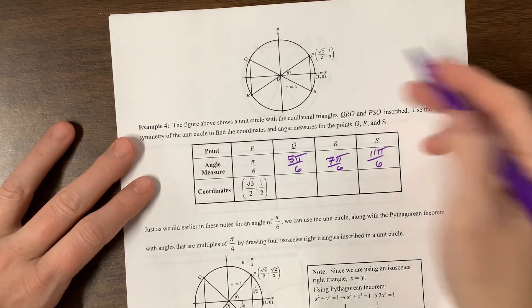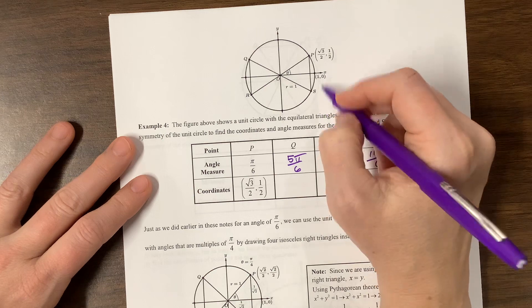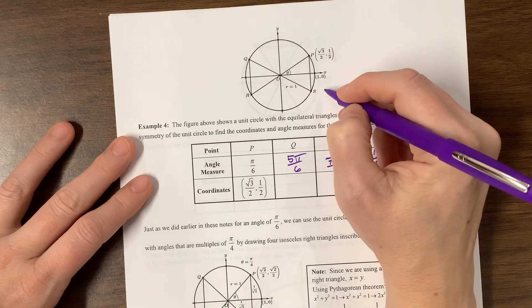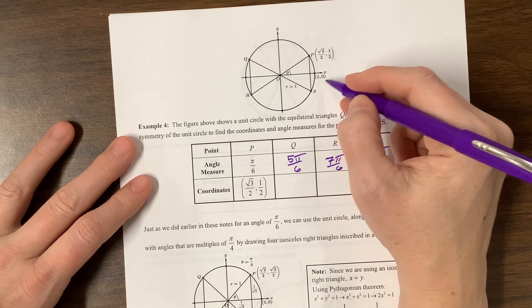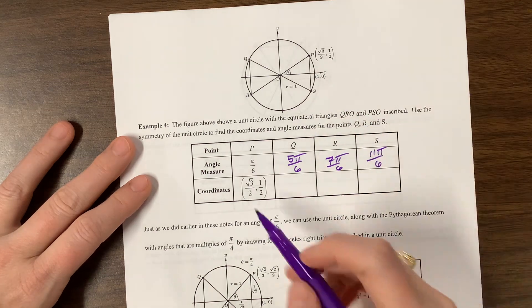Actually, right now we're doing more problems where we have to move in the negative direction. So S is also, say, negative pi over 6. Okay, so the coordinates,